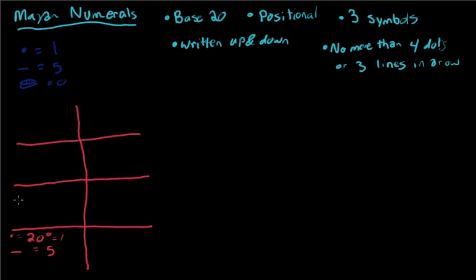As we go up, second row, the dot would equal 20 to the first power which is 20, and a line equals five times that amount which is a hundred.